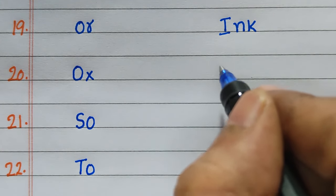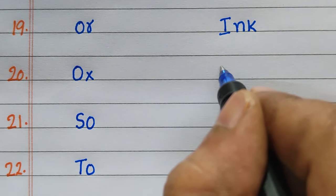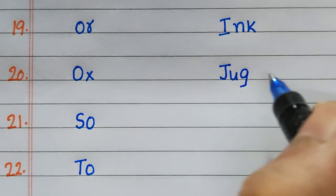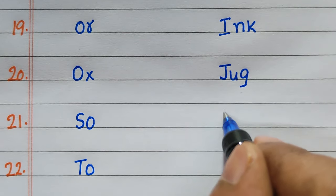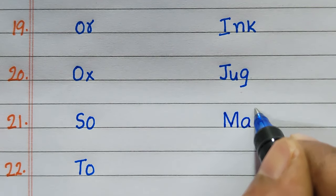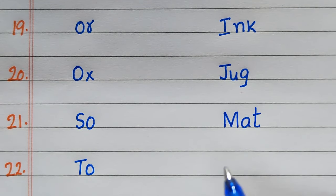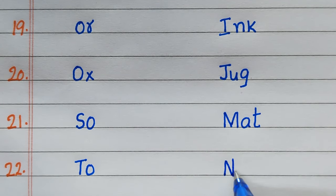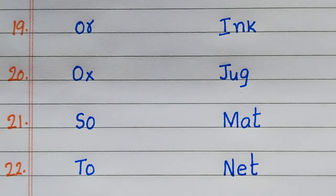Whereas the three-letter word is jug. Twenty-first, mat. Twenty-second, net.